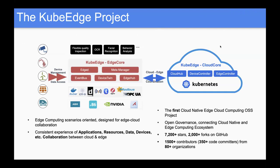The KubeEdge project has been here for a while. Currently we have accumulated more than 7,000 stars and more than 2,000 forks on GitHub. We have more than 1,500 contributors and more than 350 code committers from 80-plus organizations. I will give a quick review of our project architecture in the following slides.